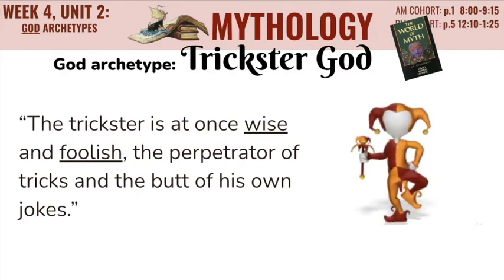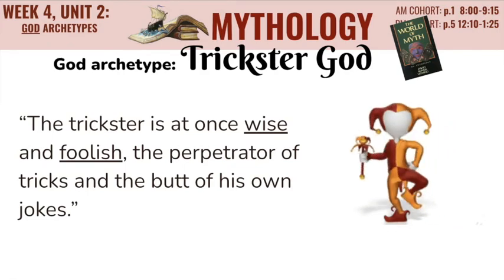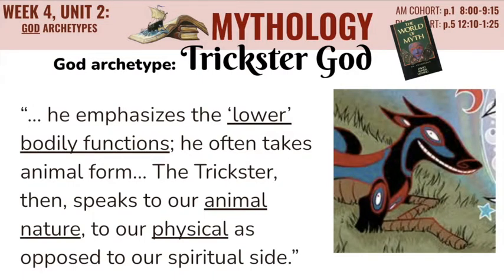Our final god archetype is the Trickster god. The trickster is at once wise and foolish — the perpetrator of tricks and the butt of his or her own jokes. He is often promiscuous and amoral. Amoral doesn't mean evil; it means neither good nor bad. He is outrageous in his actions, and yet the trickster is also profoundly inventive, creative by nature, and in some ways a helper to humanity. He emphasizes the lower bodily functions and often takes an animal form. The trickster speaks to our animal nature, to our physical as opposed to our spiritual side. This makes the trickster god a counterpart to the supreme being — if the supreme being is the most spiritually high, the trickster rejects that and instead makes themselves base and animalistic.